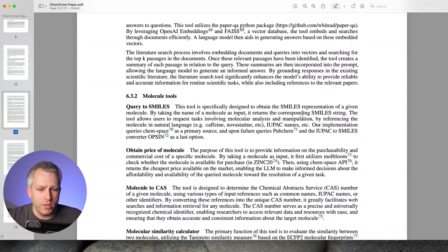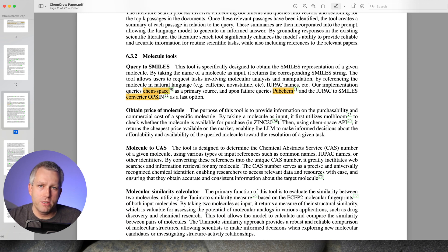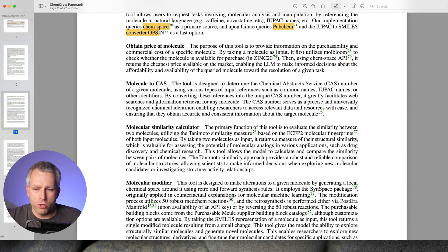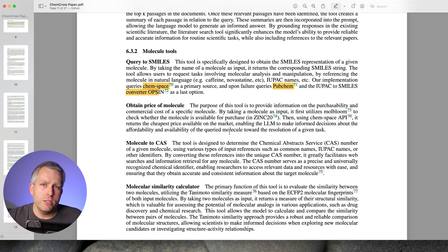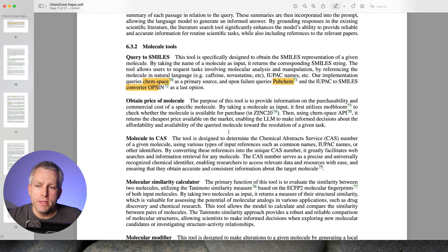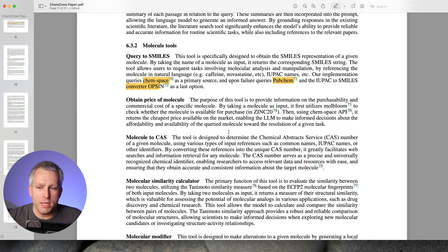And in the methods section, it tells you exactly what they did. So they implemented for the query to SMILES, they implemented with ChemSpace right here. And then if that didn't work, they implemented with PubChem. And even if that didn't work, they implemented with SMILES Converter Opsyn. And it gives you references for all of these. And the same for Obtain Price. They integrated with the Zinc database, Molecule for CAS. And so they give you all the different steps you need. So if you have a reasonably capable software engineer, they should be able to replicate pretty much exactly what they did in the paper.